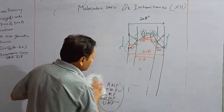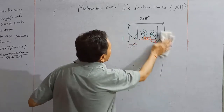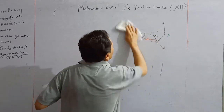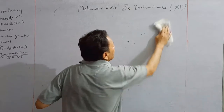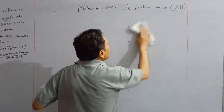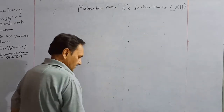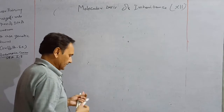According to Watson and Crick, DNA is a double-stranded, antiparallel, double extended helical structure. Now, how is this helix formed?